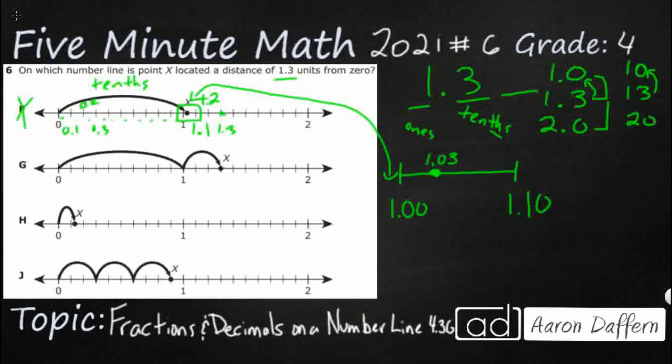So G here looks like we make two jumps that are uneven. So we're going to make a big jump to 1, and then we've got 3 tenths after that. And if we add those two together, we will get our 1.3. So G is looking good.